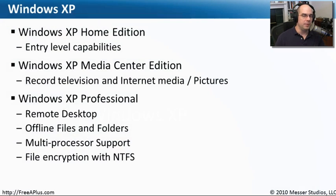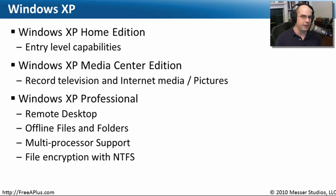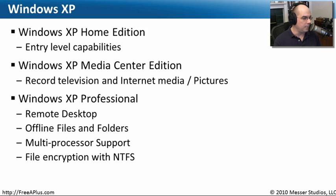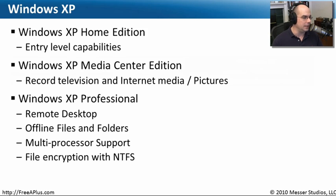Windows XP is one of the most prevalent operating systems you'll run into, and just like Windows Vista, there are different versions available. Windows XP Home Edition has some very basic capabilities. There's a version called Media Center Edition — a server you might have in your house that can record television shows, consolidate movies and DVDs, and store pictures as a centralized media server for the home. Windows XP Professional is probably the operating system you'll find most on people's desktops, offering remote desktop, support for multiple processors, and the ability to encrypt individual files using NTFS — providing enhancements over FAT32.